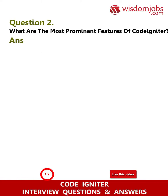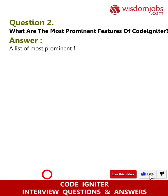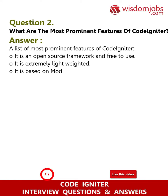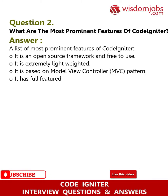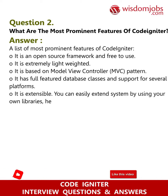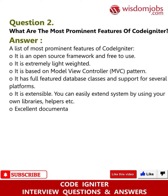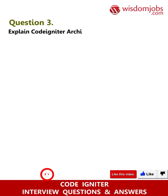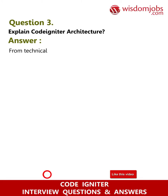Question 2: What are the most prominent features of CodeIgniter? Answer: It is an open source framework and free to use. It is extremely lightweight. It is based on the Model-View-Controller (MVC) pattern. It has full-featured database classes and support for several platforms. It is extensible — you can easily extend the system by using your own libraries, helpers, etc. It also has excellent documentation.